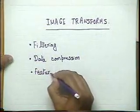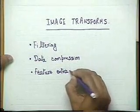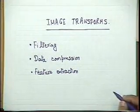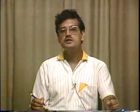Apart from filtering and data compression, image transforms are used in feature extraction — extracting specific points or pixels of interest such as edge pixels, corners, and so on. Such feature extraction operations can also be done in the transformed domain rather than in the original image domain. That is why we need to study image transformations in the image processing course.